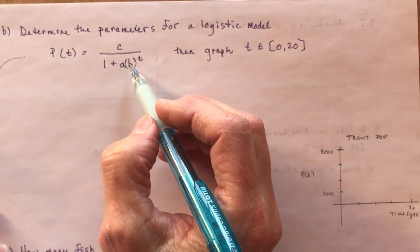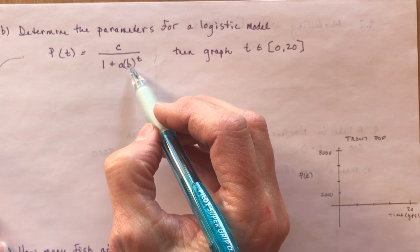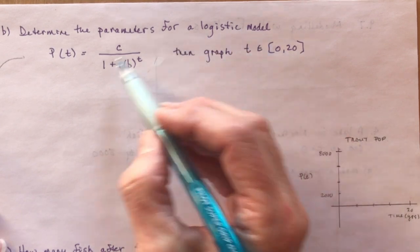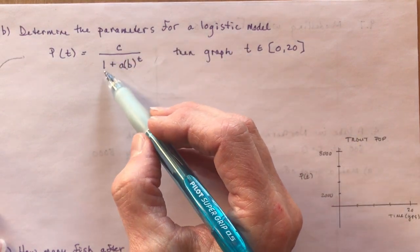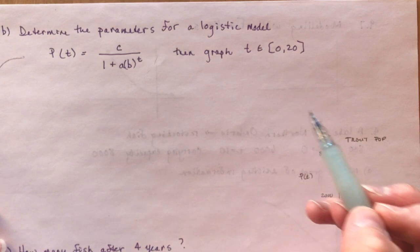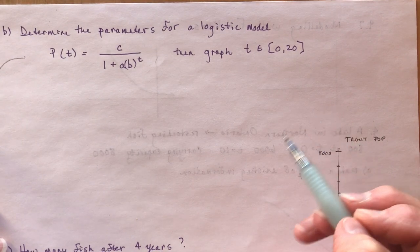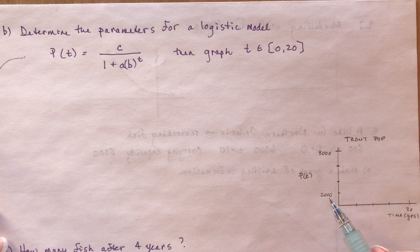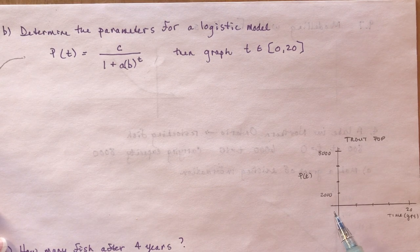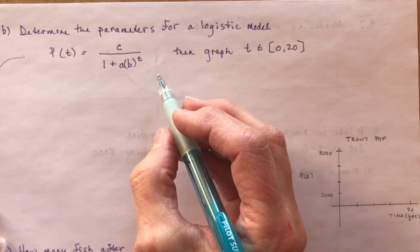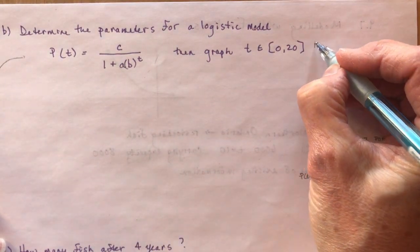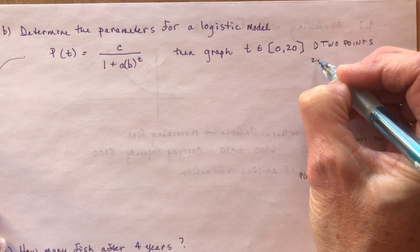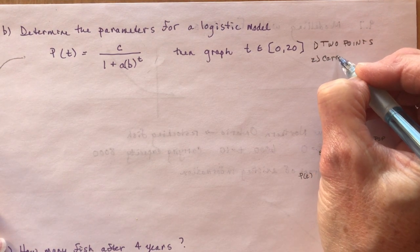So what we're going to do is we have to figure out what A and B are. So they say, determine the parameters for a logistic model. So I need to figure out what A and B are here so that I can figure out how many there would be after four years. So in order to do this question, we need to have two points on the graph, and we have to know what the carrying capacity is. We need two points and the carrying capacity.